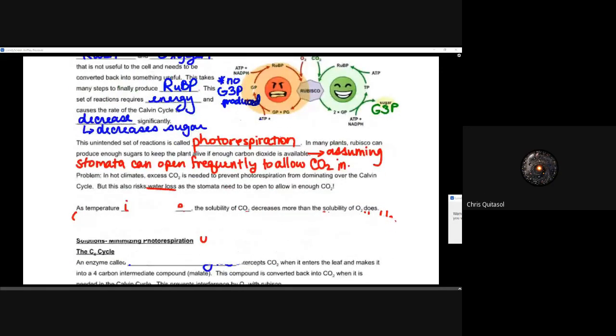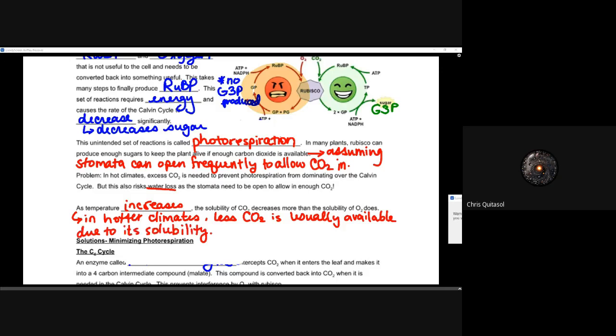The problem that arises in hot climates is that excess CO2 is needed to prevent that photorespiration from dominating over the Calvin cycle. So we need a lot of CO2, and we need to bring in a lot of CO2. But this also causes problems with regards to water loss. As that stoma needs to open up and bring in that CO2, it's also going to cause water to evaporate, and this is bad. As that temperature increases, the solubility of CO2 decreases more than the solubility of O2. In hotter climates, there is less CO2 available due to the solubility difference. Oxygen gas dissolves in warmer air better than CO2 does. When you think about how molecules dissolve, O2 is going to dissolve easier. Now you can start to see a mounting issue that can happen in plants that live in temperatures that are significantly warmer.